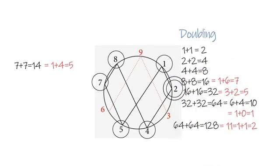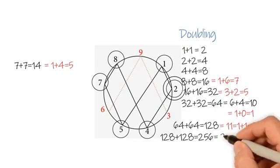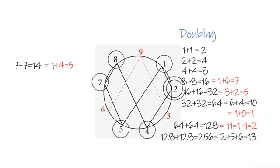128 is doubled, making 256. Again, 2 plus 5 equals 7. 7 plus 6 equals 13. And then, 1 plus 3 is 4.